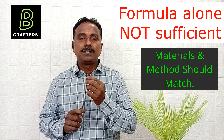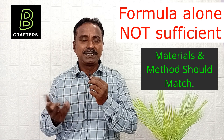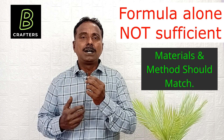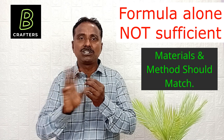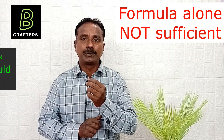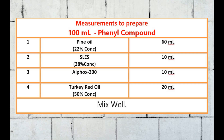To get a homogeneous medium, formula alone is not sufficient — other things must match. How do we verify whether the formula and the materials are matching? These are the measurements to prepare 100 ml phenyl compound. The reason we use 100 ml is that before planning for business purposes, we need to ensure compatibility of this formula with all our materials — including perfume, color, and preservatives.